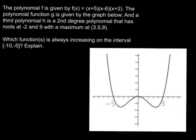We're talking about comparing different polynomial representations. The question says the polynomial f is given by f(x) = (x+5)(x-6)(x+2).